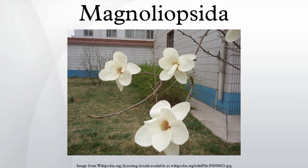In the APG and APG2 systems, botanical names are used only at the rank of order and below. Above the rank of order, these systems use their own names, such as Angiosperms, Eudicots, Monocots, Rosids, etc. These names refer to clades. The class Magnoliopsida is therefore not defined. The APG rejects the idea that Dicotyledons could be a taxonomic unit with a formal name, as the Dicots are considered to be paraphyletic.